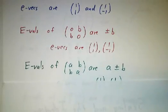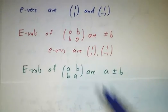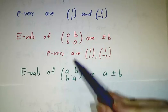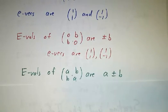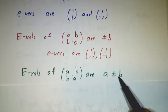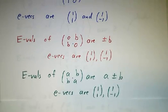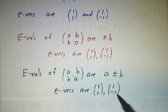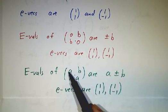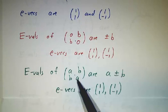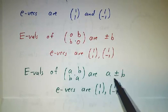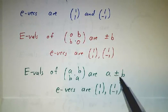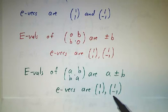Now let's add a times the identity to that. The eigenvalues of this matrix are a bigger than the eigenvalues of that matrix. In other words, they're a plus or minus b. And the eigenvectors, they're still (1,1) and (1,-1). So whenever you see a matrix of the form (a,b,b,a), you should instantly know that the eigenvalues are a plus or minus b, and that the eigenvectors are (1,1) and (1,-1). And it all comes from scaling.